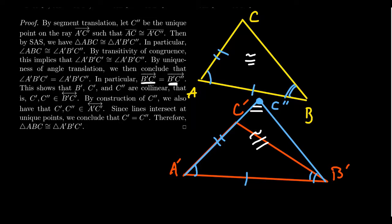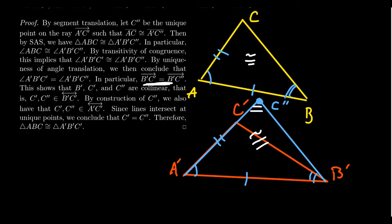The rays B'C'' and B'C' are equal to each other, which forces that C'' and C' are equal to each other. Since C' equals C'', this shows that triangle A'B'C' equals triangle A'B'C''. And since triangle A'B'C'' was congruent to triangle ABC, we know that triangle ABC is congruent to triangle A'B'C'. Thus, proving the angle-side-angle situation.